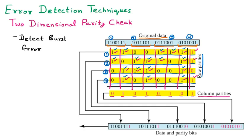You can see it forms a two-dimensional table, which is why it is called the two-dimensional parity check — we find parity both row-wise and column-wise. Now all data is taken with its parity. The first block with its row parity, then the second block with its row parity, the third block with its row parity, and the fourth block with its row parity. One final row — the column parity — is appended at the end of all the blocks.